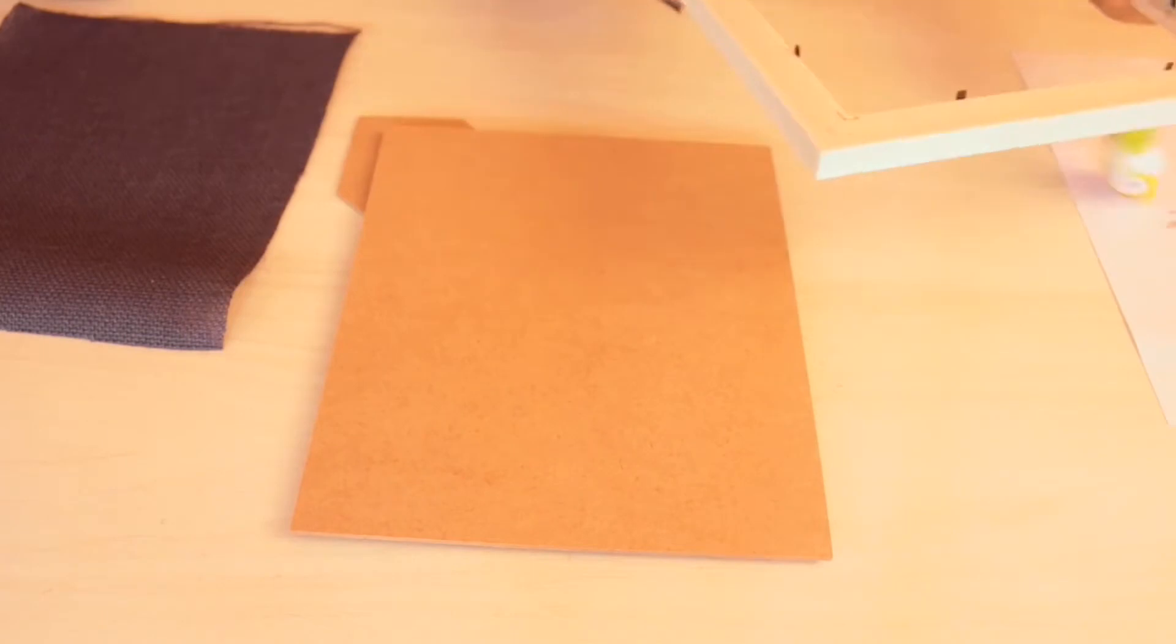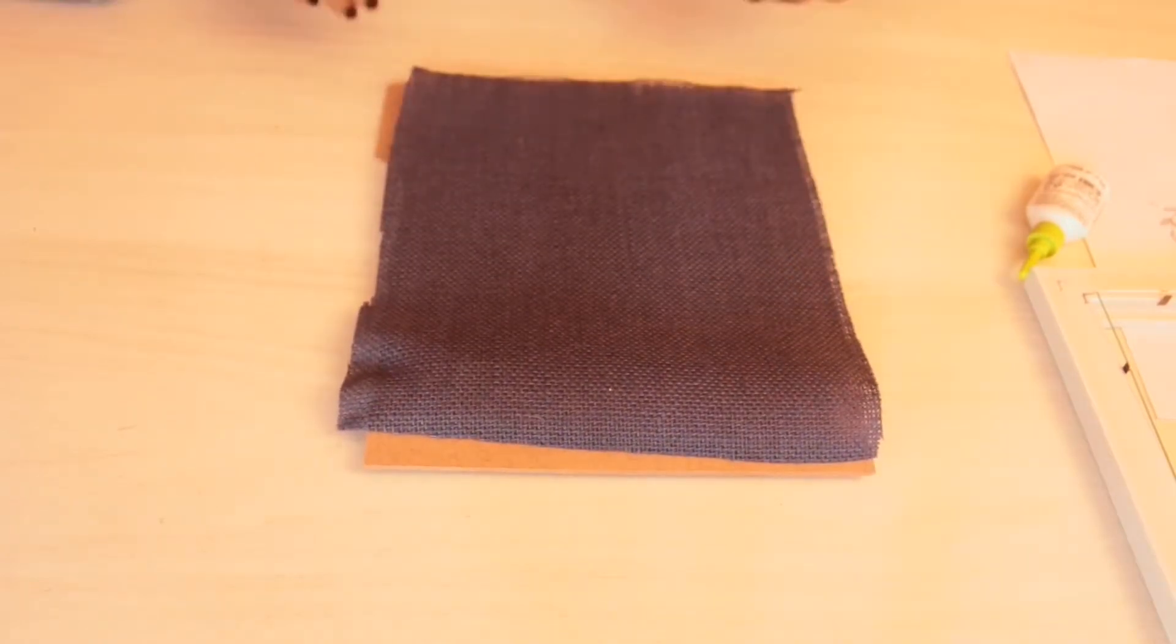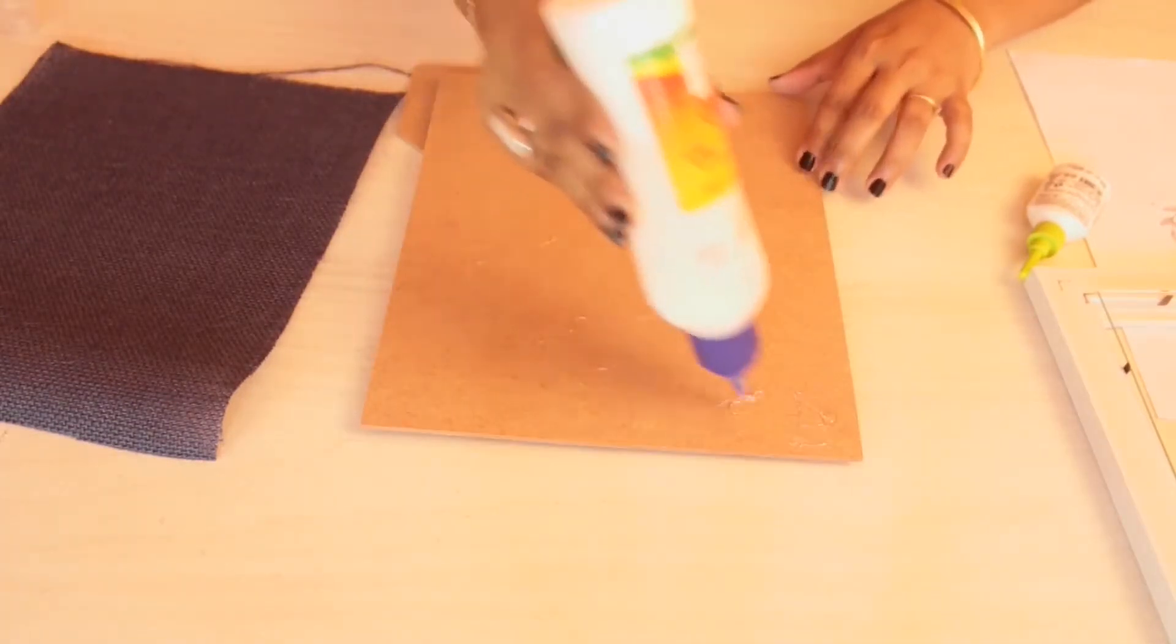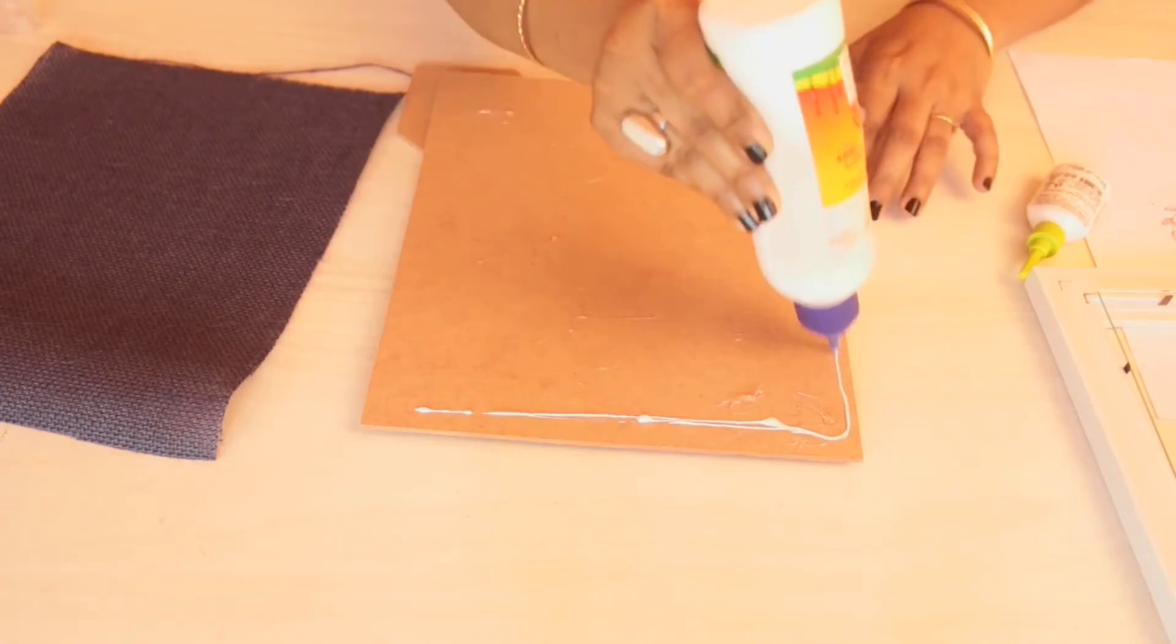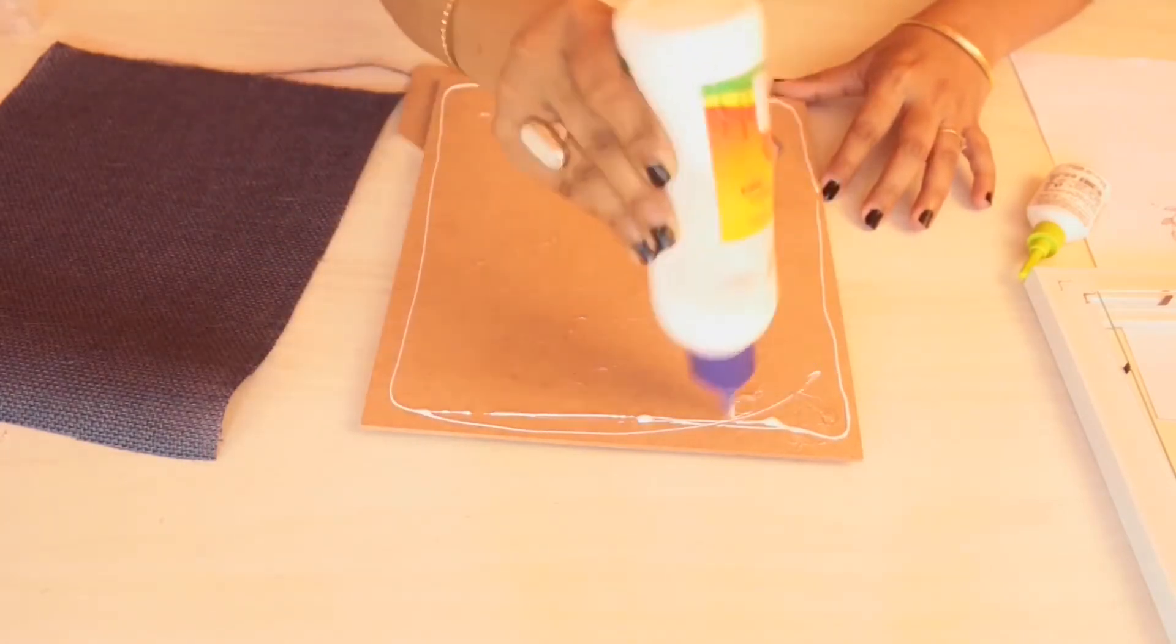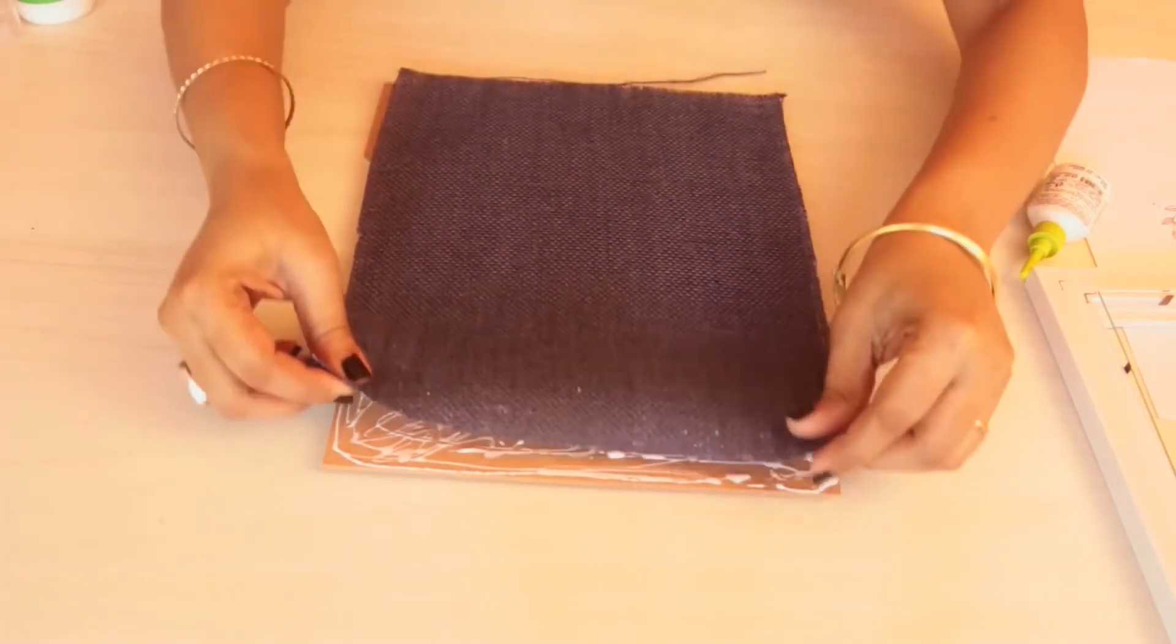For this decor piece I am taking this photo frame, open it up, and then I will stick this piece of burlap onto the cardboard part. You guys can take any other piece of cloth according to your choice. The cloth should be cut into the required size. Glue the cloth onto the cardboard.